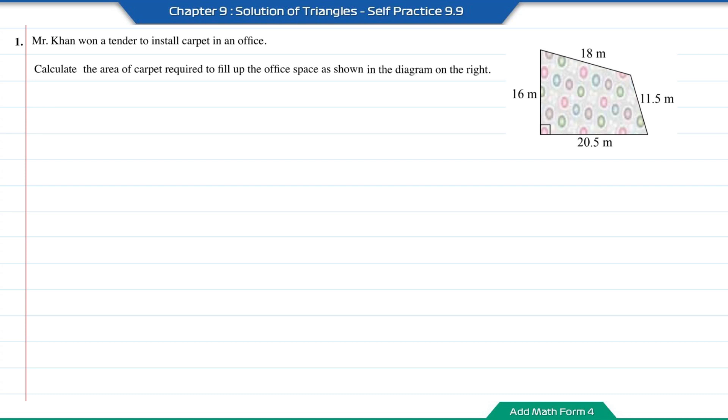The office space is a quadrilateral. If we draw a diagonal here, it will split this quadrilateral into two triangles. Let us label the triangle here as A and the triangle on the other side as B.